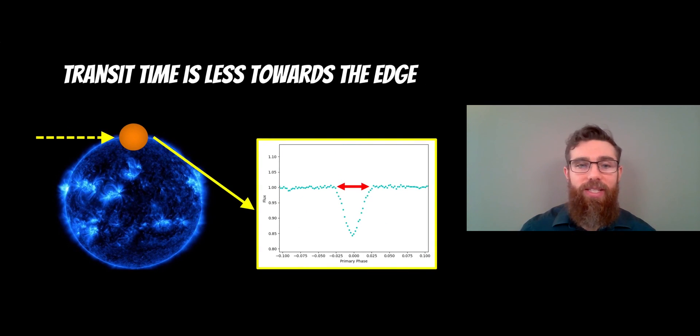So the transit time is going to be less if it's towards the edge, and that should make sense. If the planet is moving at the same speed as it passes across, if it passes across the edge there's obviously less of the star to travel across. So the time it takes, or the transit time, is going to be less than if it passed across the center.